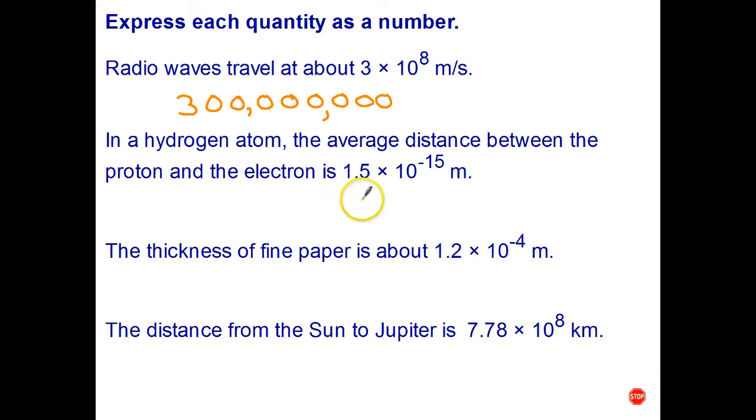So I write the 1.5 to start with, I'll put it way back here, and then I've got to move my decimal point 15 places to the left. So one place and then 14 zeros: one, two, three, four, five, six, seven, eight, nine, ten, eleven, twelve, thirteen, fourteen. I only just left enough space. And there it is. I should have actually left a little bit more space, but that'll do.